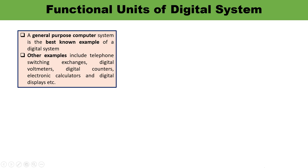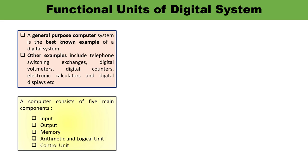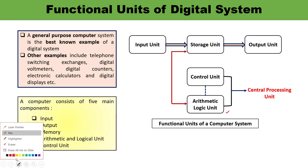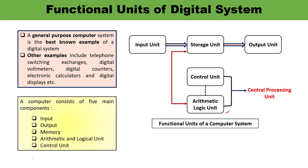Now we have to understand the functional units. A computer consists of five major components: input, output, memory, arithmetic and logical unit, and the control unit. ALU and control unit form part of the central processing unit, CPU. Here you can observe the block diagram showing input unit, storage, output, control unit, and arithmetical logical unit — they form the part of the central processing unit.